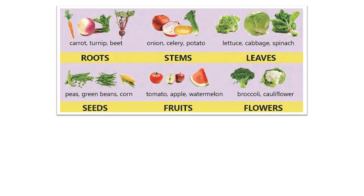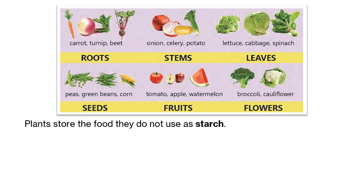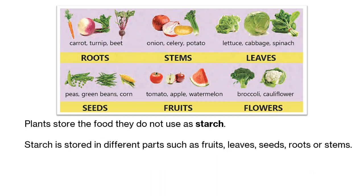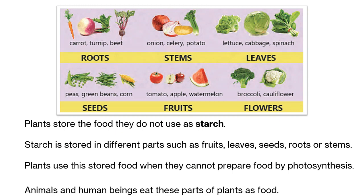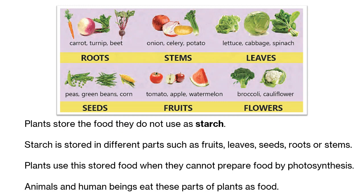Plants store the food they do not use as starch. Starch is stored in different parts such as fruits, leaves, seeds, roots or stems. Plants use the stored food when they cannot prepare food by photosynthesis. Animals and human beings eat these parts of plants as food.